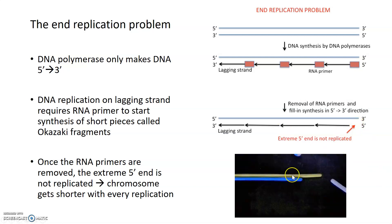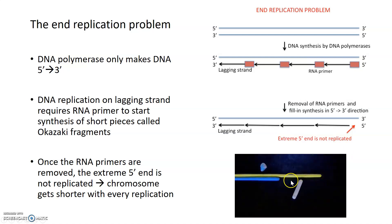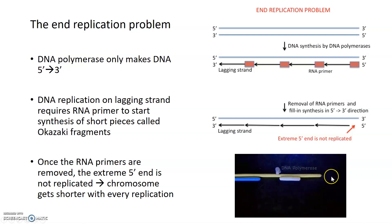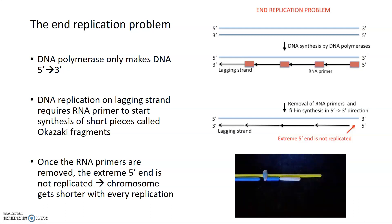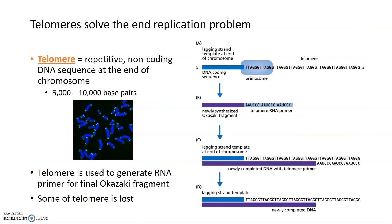You can see that end replication problem happening here. DNA polymerase will add nucleotides to an RNA primer, and RNA primer can bind here and DNA polymerase can add again — but now there's nowhere for that RNA primer to bind. So the end of this DNA never gets replicated. This could be a problem because if the chromosome gets shorter with every replication, every time you divide your cells you get closer to potentially losing important DNA that codes for genes. The solution to the end replication problem is a structure called a telomere.